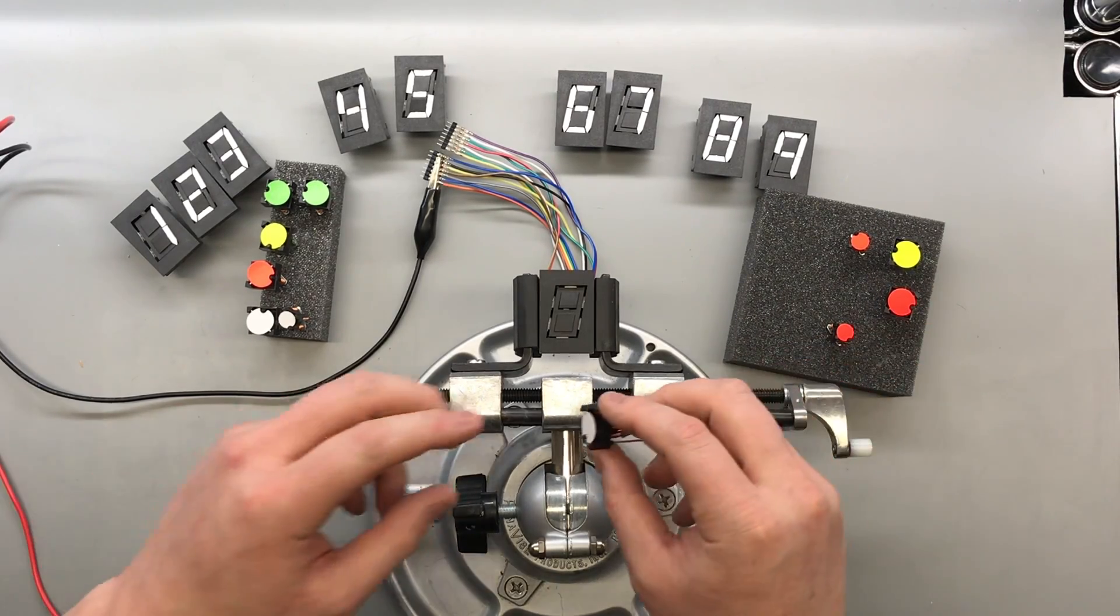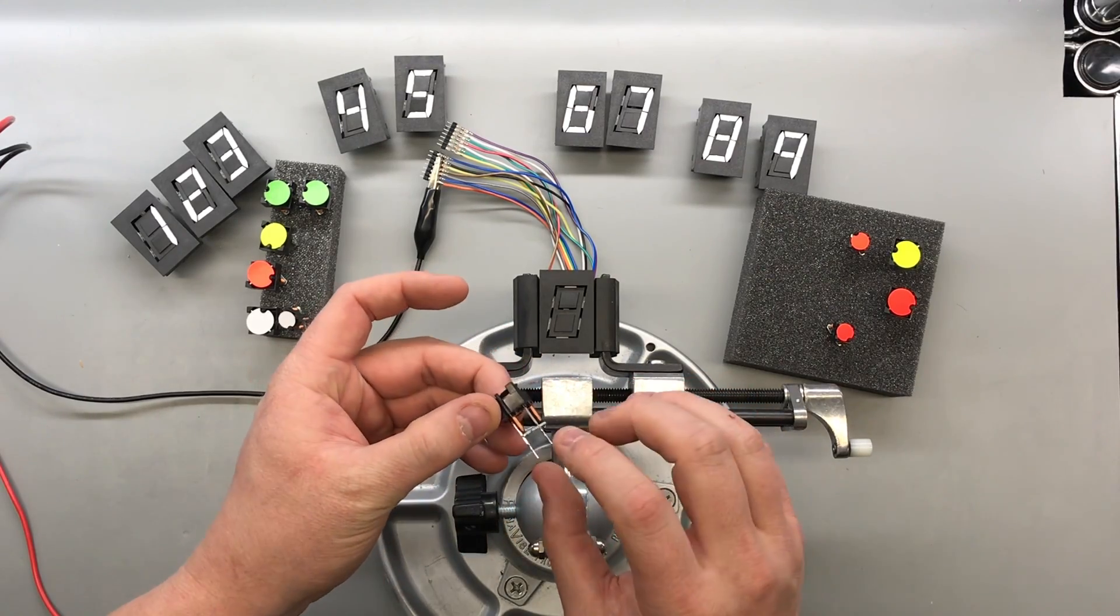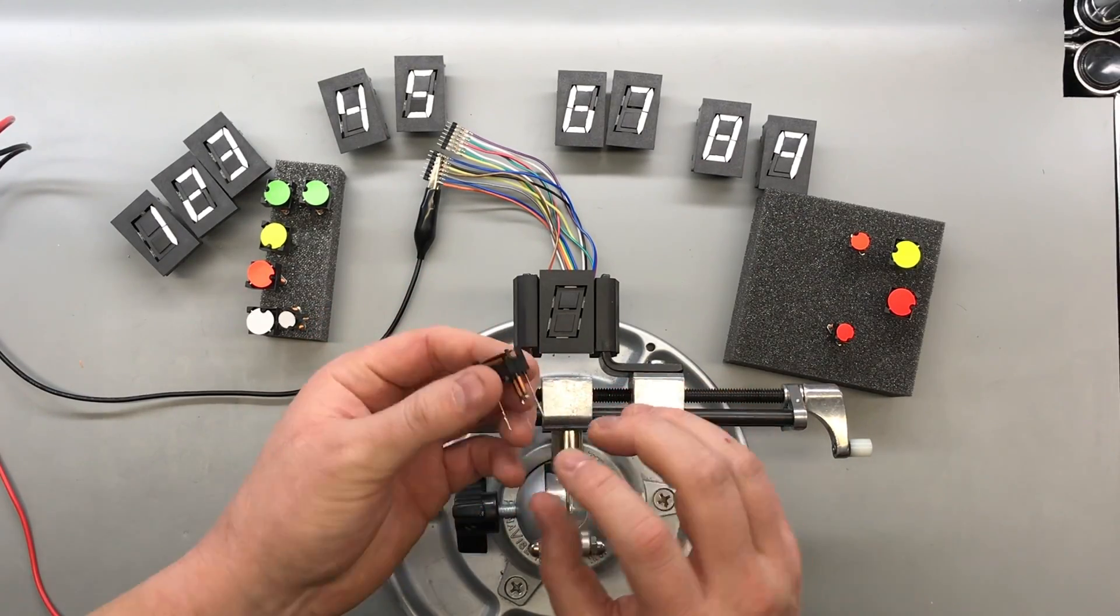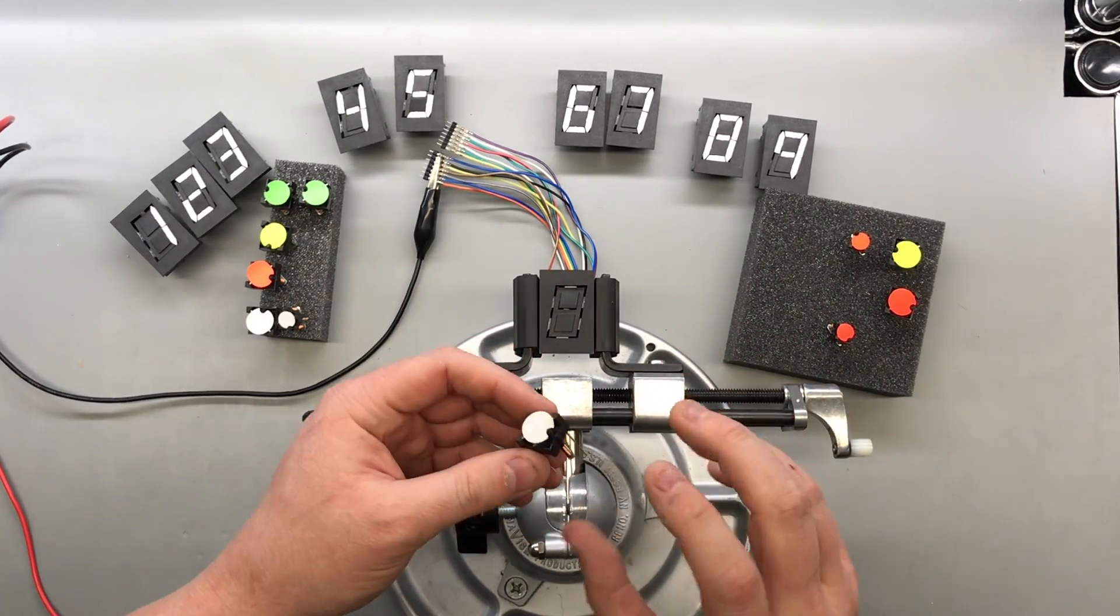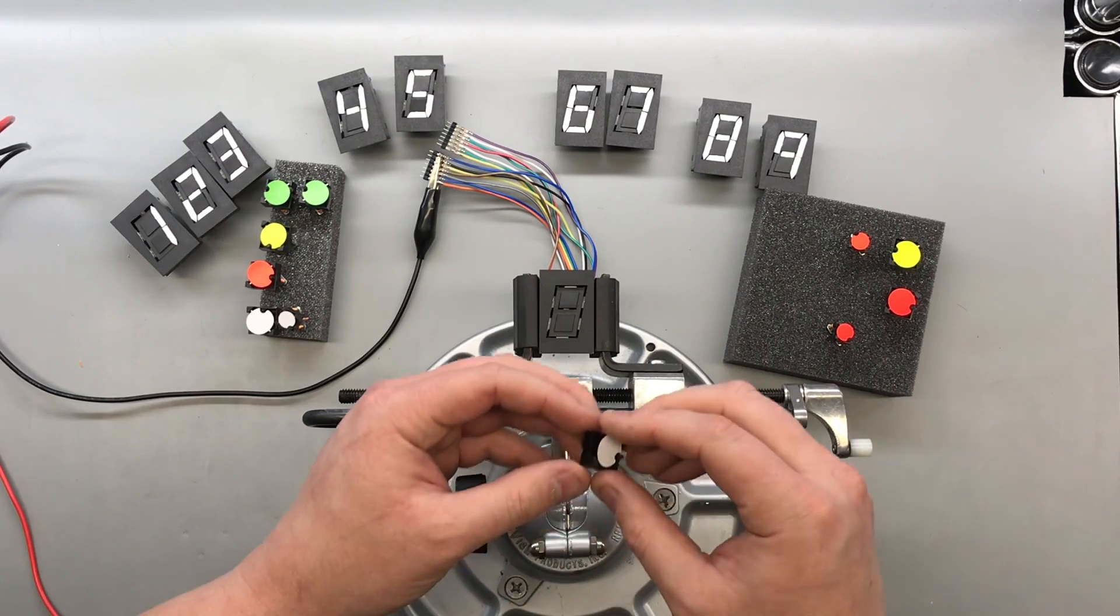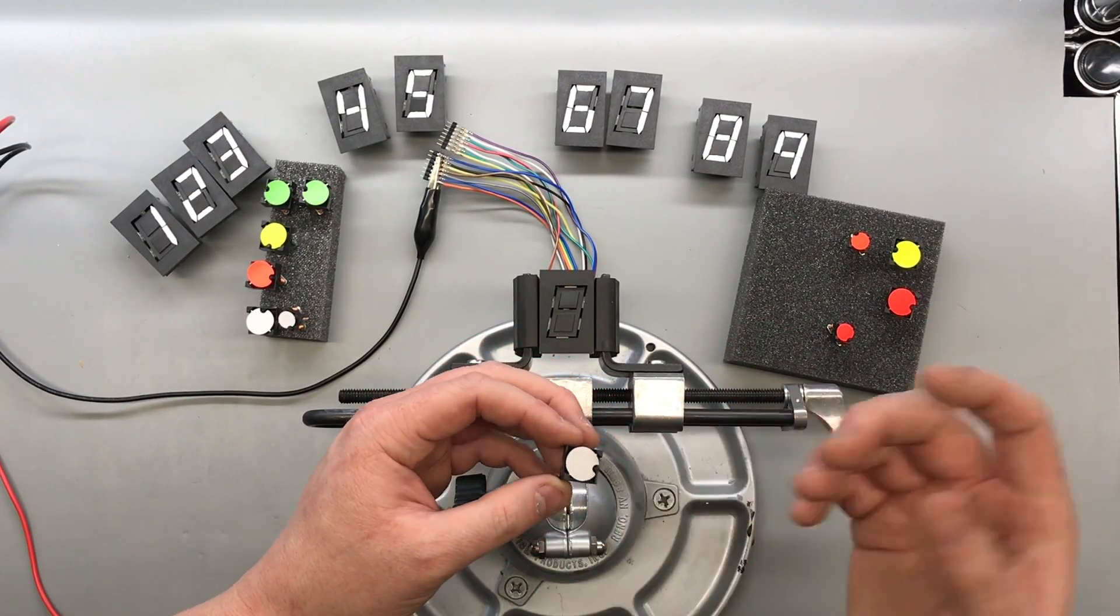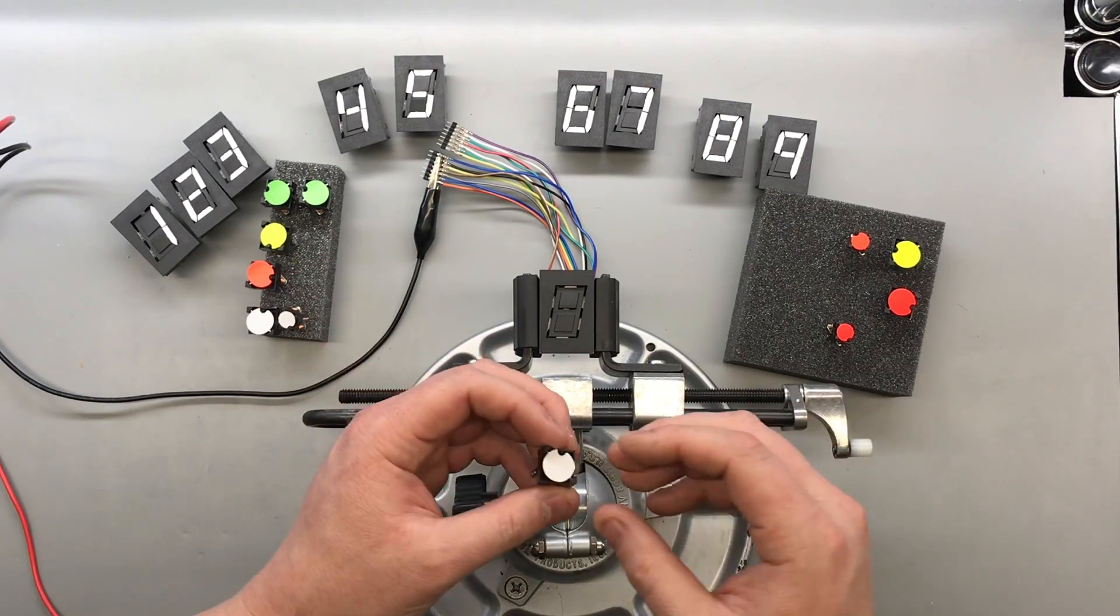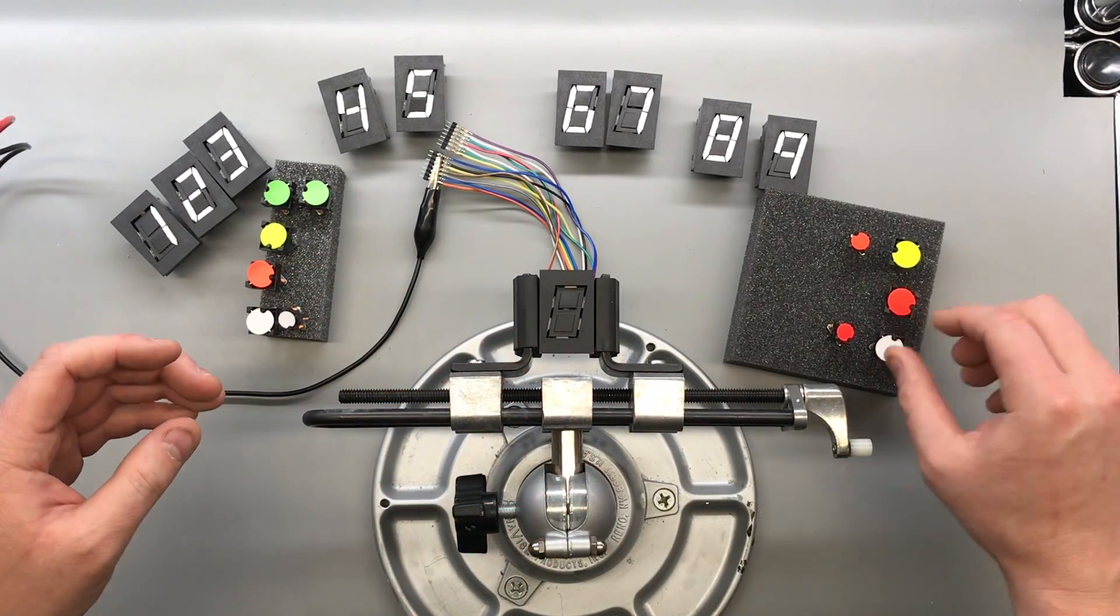So flip dots are dots that basically flip and when you apply a voltage across the coils the dots will flip, reverse that voltage then the dot will flip the other way and it retains the last state. So if the power is lost it still remember where it was.